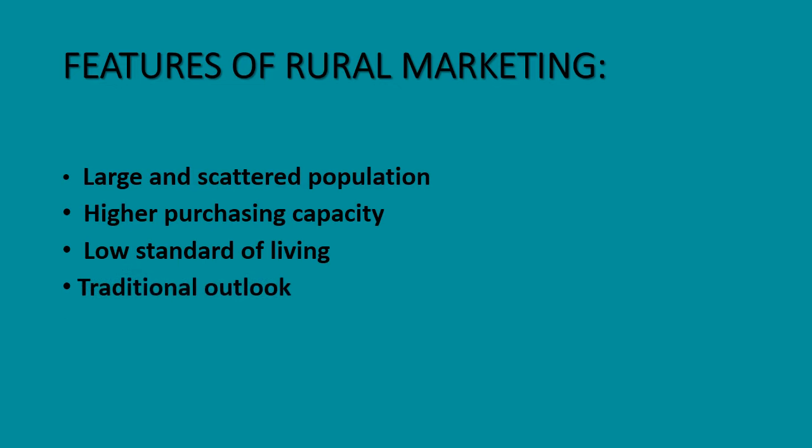Next is traditional outlook. Rural consumers have old customs and traditions. They do not prefer changes, but gradually they are changing their demand patterns. However, their overall outlook remains traditional as before. Next is market growth. Rural markets are growing steadily over the years. The demand for traditional products is changing — from agri inputs and mopeds to branded products and FMCG consumer durables such as refrigerators and TVs. So the rural market is growing at a steady rate.